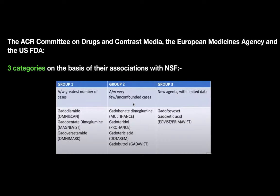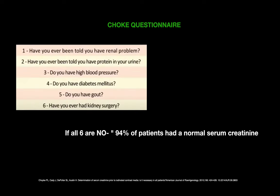In an emergency situation when you cannot check serum creatinine, you can ask the patient these questions: Have you ever been told you have a renal problem? Have you ever been told you have protein in your urine? Do you have high blood pressure? Do you have diabetes or gout? Have you ever had kidney surgery? If all six answers are no, 94% of patients had a normal serum creatinine level, according to the reference article.